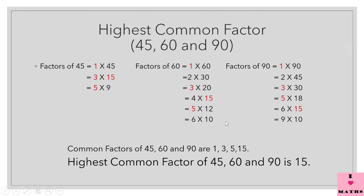Let us now find the highest common factor of 45, 60 and 90. Factors of 45: 1 × 45 = 45, 3 × 15 = 45, 5 × 9 = 45. So 1, 3, 5, 9, 15 and 45 are the factors of 45.